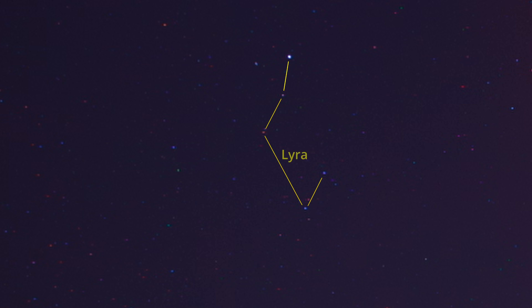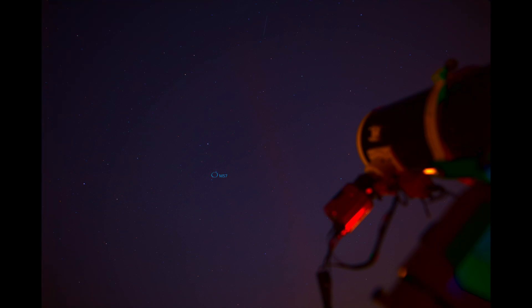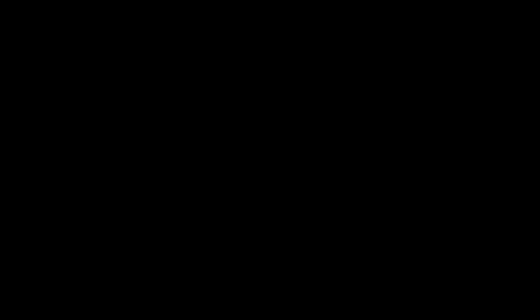Then I tried again using my Skywatcher Explorer 200 PDS. Here you can see the location of this object in the constellation of Lyra. There's a reddish light beam — that's an artificial light source from the park. After first image processing using PixInsight only, I created this image and I was really happy with it.